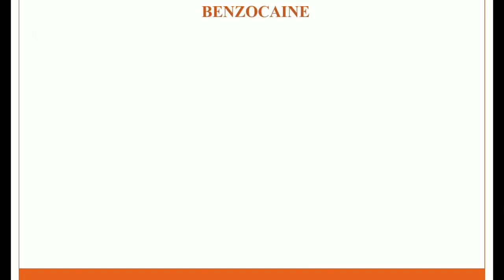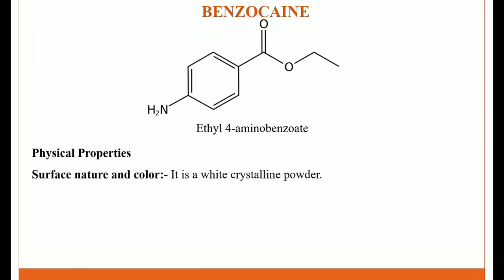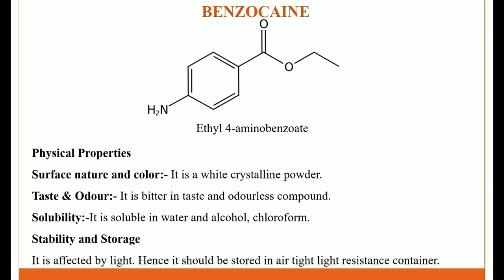The next local anesthetic agent is benzocaine. The IUPAC name is ethyl 4-aminobenzoate. Physical properties: surface nature and color — it is a white crystalline powder. Taste and odor — it is bitter in taste and odorless. Solubility — it is soluble in water, alcohol, and chloroform. Stability and storage condition — it is affected by light, hence it should be stored in an airtight, light-resistant container.